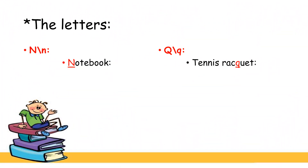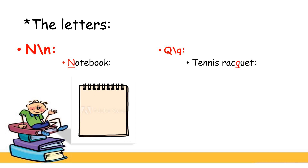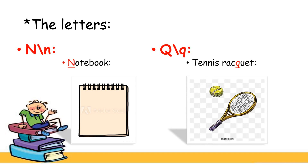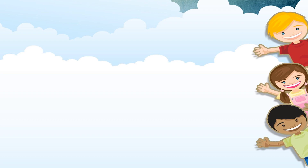Now we want to talk about the letters in our title. The first letter is the letter N — capital N and small n. An example is 'notebook.' Let's see — yes, this is a notebook. The second letter is the letter Q. An example is 'tennis racket.' Let's see — this is a tennis racket. The end. Thank you.